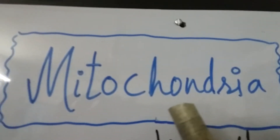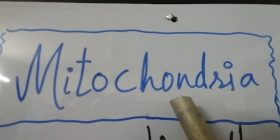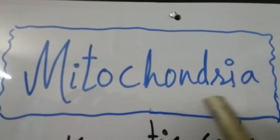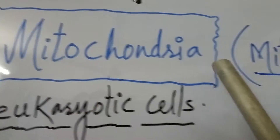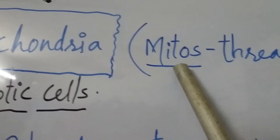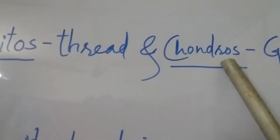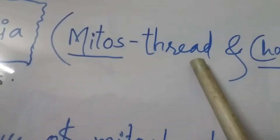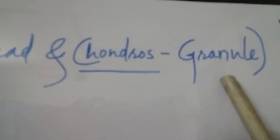Hello friends, today you will be benefited by one more topic: mitochondria. Mitochondria is made up of two words — mitos and chondras. Mitos means thread and chondras means granules.